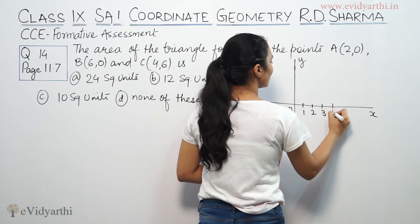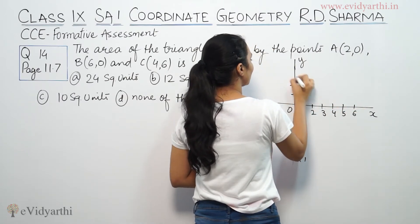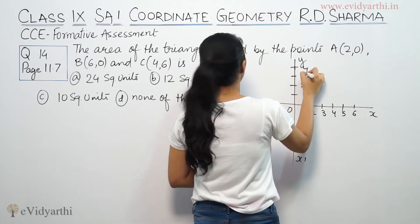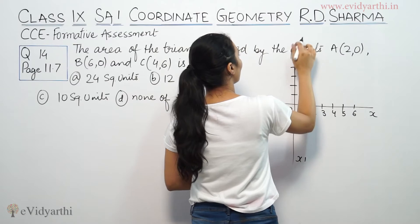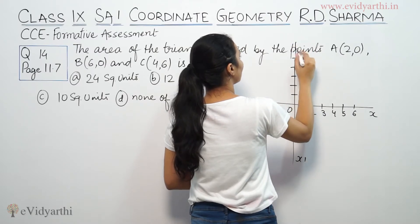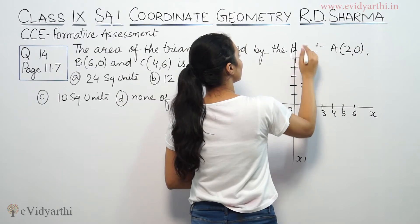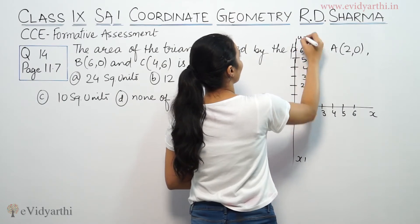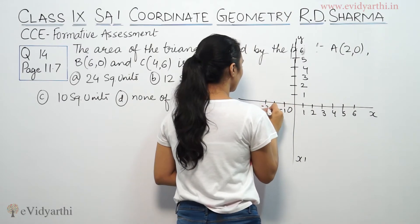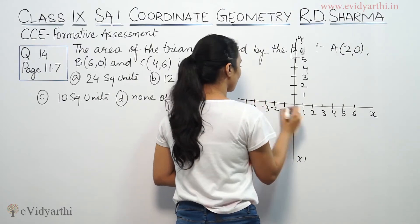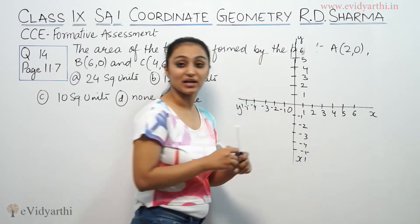Marking the axes: positive x-axis goes 1, 2, 3, 4, 5, 6; positive y-axis goes 1, 2, 3, 4; and the negative sides go minus 1, minus 2, minus 3, minus 4, minus 5 on both axes.